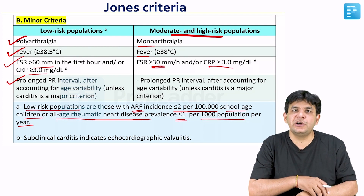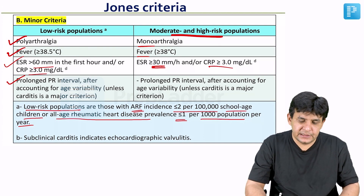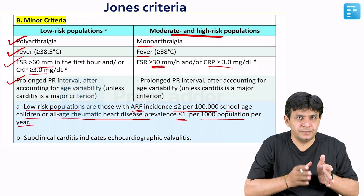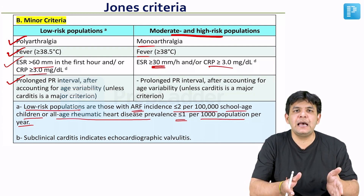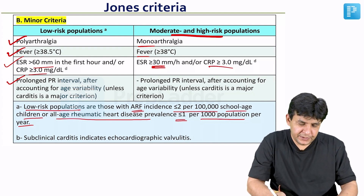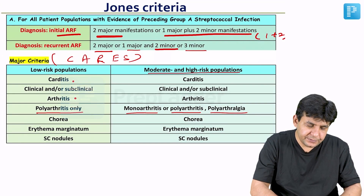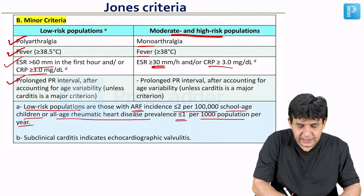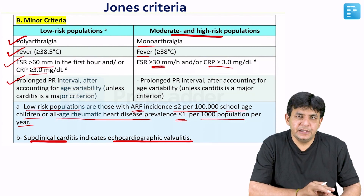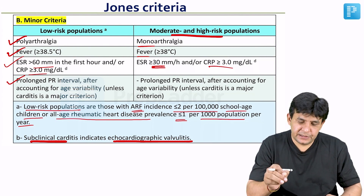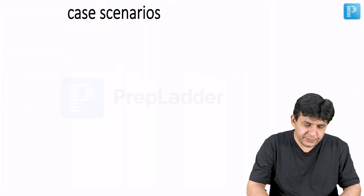This is the logic of Jones criteria for diagnosing acute rheumatic fever. ASO titers have a supporting role — they don't come in any criteria, but a person with acute rheumatic fever will have ASO titers more than 200 Todd units. Subclinical carditis refers to echocardiographic changes suggesting valve inflammation, termed echocardiographic valvulitis. This is Jones criteria; Dukes criteria is for infective endocarditis — both are definite exam questions to remember.